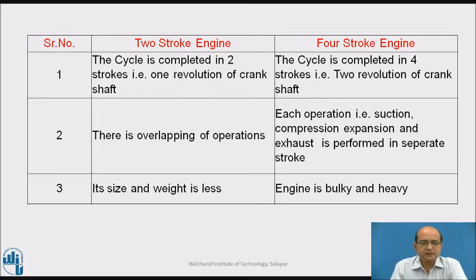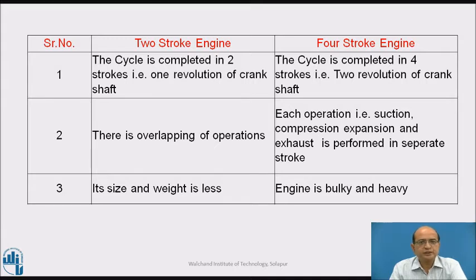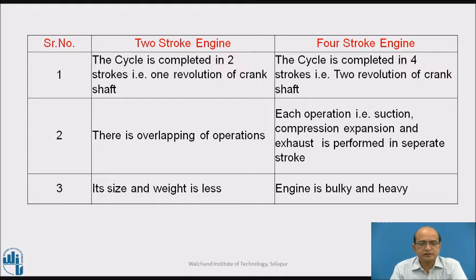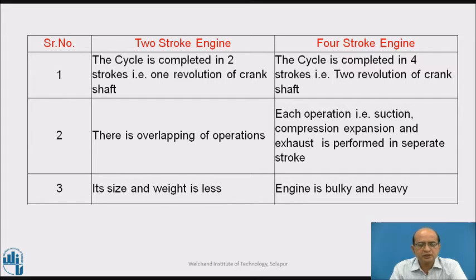The first point of comparison is the cycle. The cycle used is different for different types of fuel — for petrol engines the Otto cycle is there and for diesel engines there is the diesel cycle. This cycle is completed in two strokes in case of two-stroke engines, with one revolution of the crankshaft. Whereas in case of four-stroke engines, we require four different strokes for completion of the cycle and two revolutions of the crankshaft.